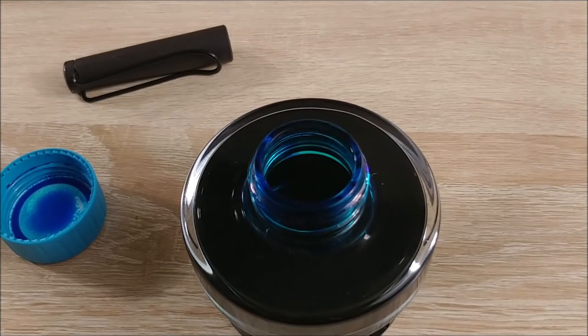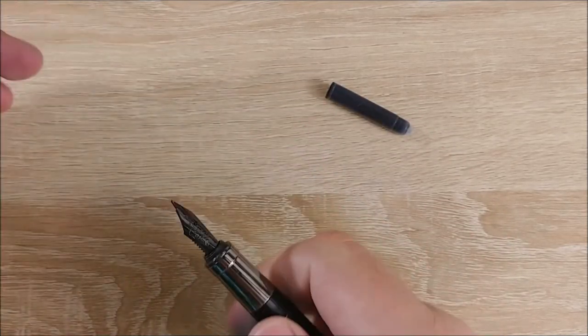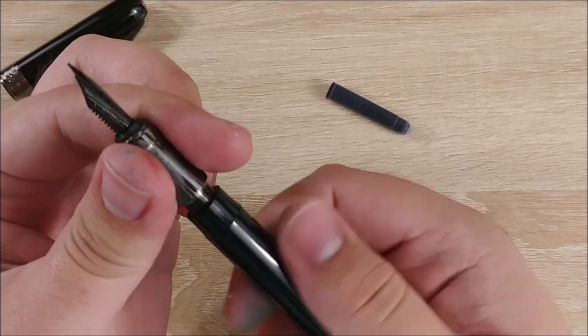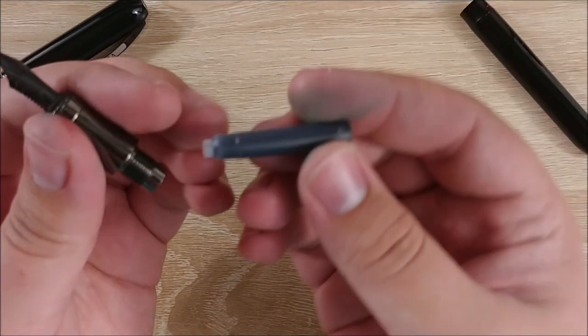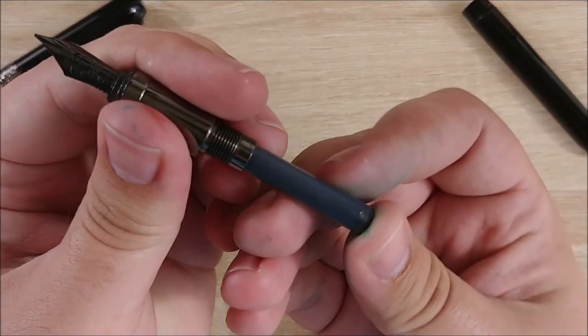With a cartridge, it's going to be a little different. So you're going to grab your pen, uncap it, unscrew the body, and then all you have to do at this point is take your cartridge and press it in until you feel a little click. Once you feel that click, you're good to go.